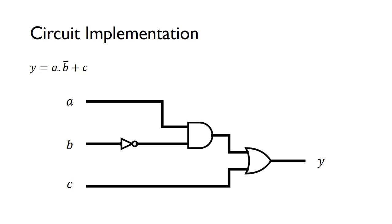Once you've got your simplified expression — Y equals A·NOT B + C — you can just build the circuit. We've got A and NOT B, so we need an AND gate to implement that part. We need a NOT gate to invert B to get NOT B. Then that result is OR'd with C as well, giving us our final expression: Y equals A AND NOT B, OR C.